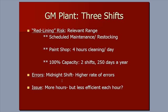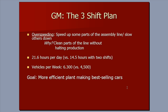One challenge is errors on the midnight shift. Those working in the middle of the night have a higher rate of errors — maybe because they're tired or don't work as efficiently. The question becomes: if you go from two shifts to three shifts and work more hours, will you be efficient enough that total production improves? More hours but less efficiency per hour — that's the risk.